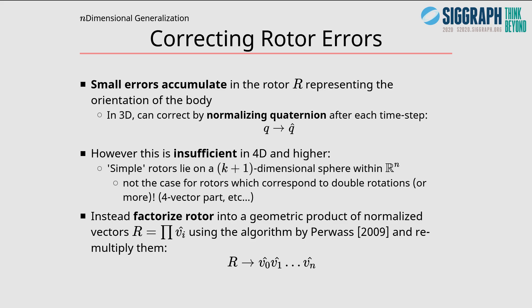Another issue is that as we integrate these equations, small errors accumulate in the rotor representing the orientation of the body. In 3D we could correct this by normalizing the quaternion after each time step, but we cannot do that in 4D and higher, because while we could normalize simple rotors that lie on a k plus 1 dimensional sphere within r^n, since they just have a scalar part and a bivector part, we can't do that for rotors that correspond to double rotations, since they have a 4-vector part for example. Instead we can factorize the rotor into a geometric product of normalized vectors using the algorithm by Perwass, and re-multiply them together to get a cleaned up rotor.